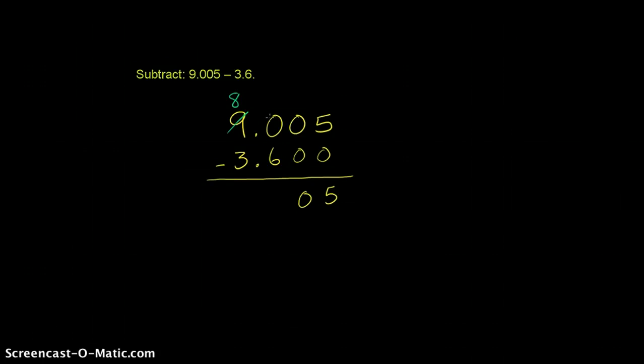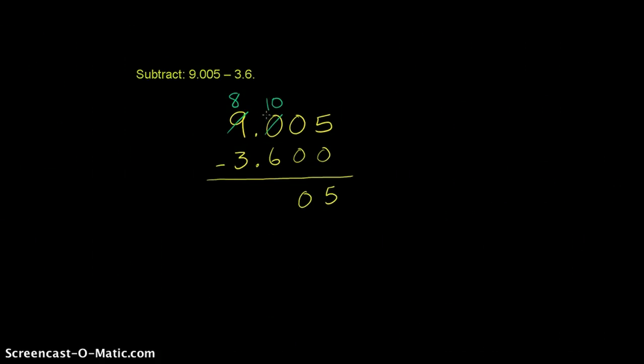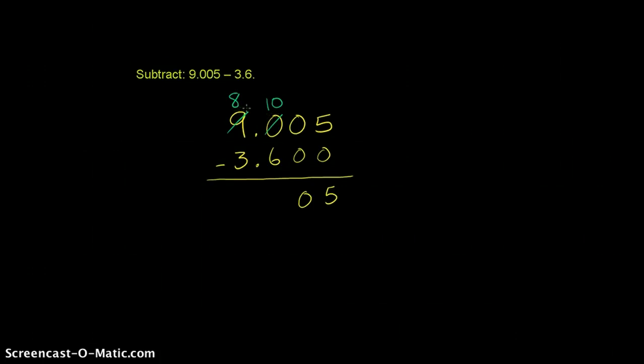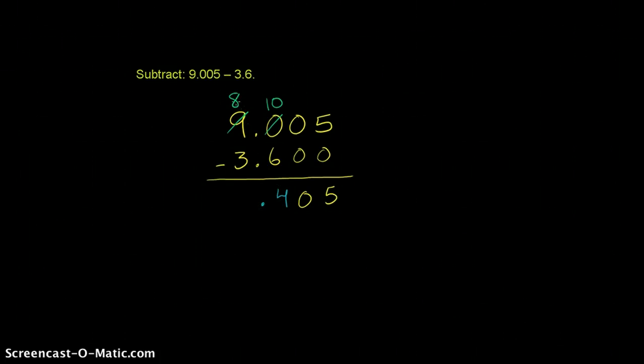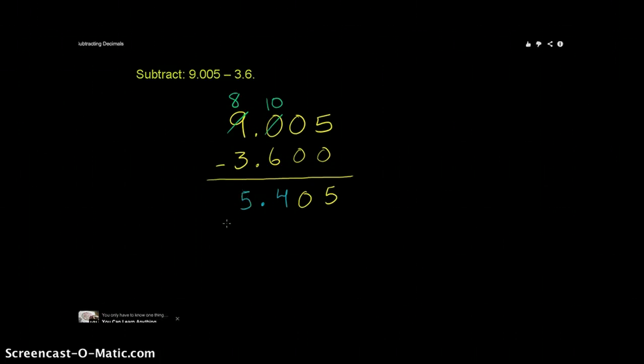And we need to do something with that 1. We're going to put it in the tenths place. Now remember, 1 whole is equal to 10 tenths. This is the tenths place, so then this will become 10. Sometimes it's taught that you're borrowing the 1, but you're really taking it, and you're actually taking 10 from the place to your left. So 1 whole is 10 tenths. So you have 10 minus 6 is 4. You have your decimal right there. And then you have 8 minus 3 is 5. So 9.005 minus 3.6 is 5.405.